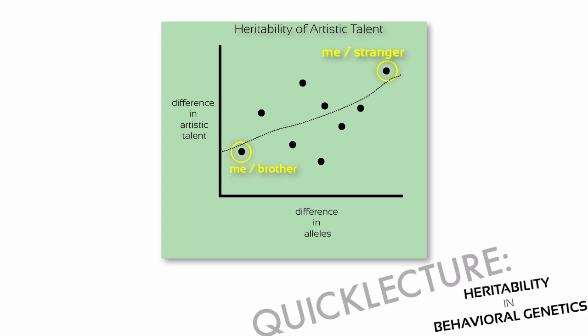Again, just to remind you, it's an idealized graph and it's not real data. Note that the x-axis says nothing about the actual magnitude of genes, only the difference, and the same for the y-axis. So my brother and I might both be very bad artists, or we might both be very good artists. The graph simply indicates that we don't differ much, wherever we are.